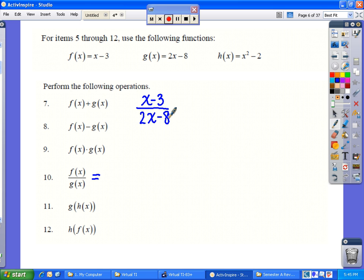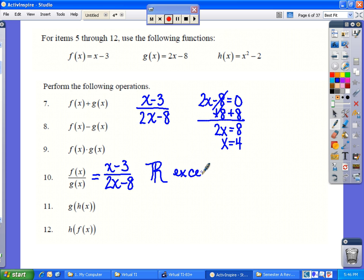except that we do want to discuss the domain, knowing that the denominator cannot be equal to 0. We will set 2x minus 8 equal to 0, and solve for x to determine what value x cannot be. Add 8 to both sides. 2x equals 8. Therefore, x equals 4. We divided both sides by 2. If x equals 4, that would make our denominator equal to 0, which is not defined. So we want to state our answer, x minus 3 over 2x minus 8, with a domain of all real numbers, except that x cannot equal 4.